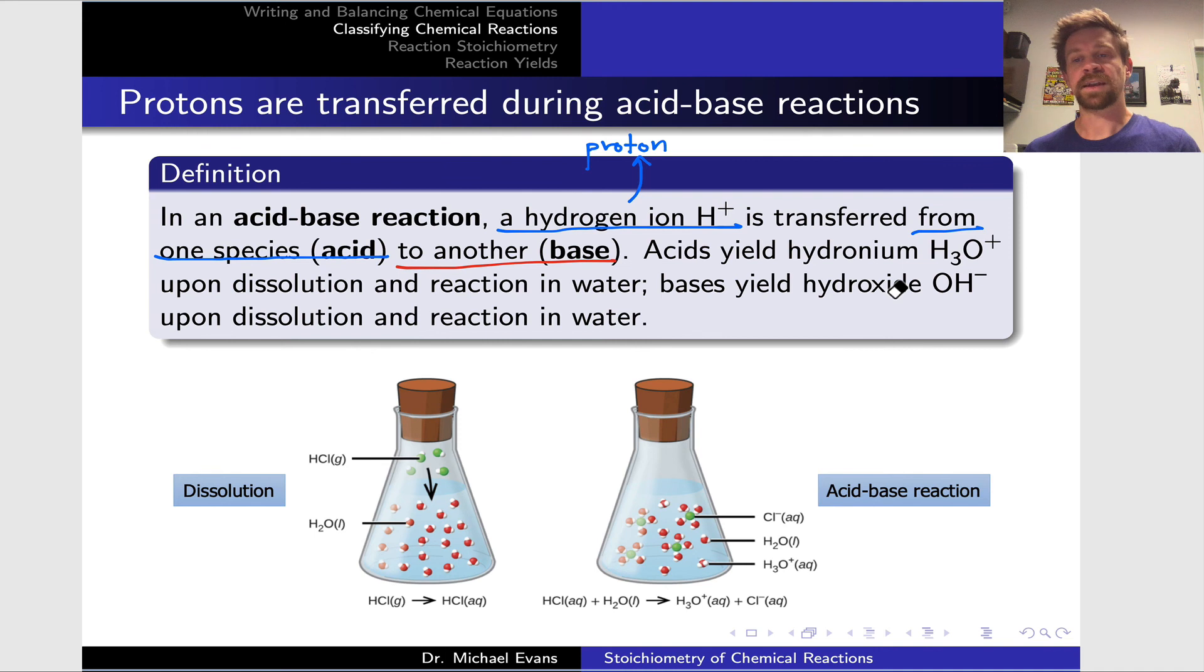When you take an acid and dissolve it in water, water actually has the ability to act as either an acid or a base itself. When an acid is dissolved in water, the hydronium ion is formed, H3O+. When you take a base and dissolve it in water, the hydroxide ion is formed, OH-. These form as the acid gives a proton to water, gives H+ to H2O to make H3O+, and the base takes a proton away from water, forming OH- from H2O.